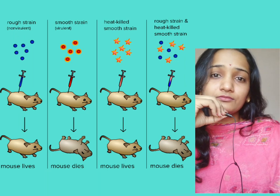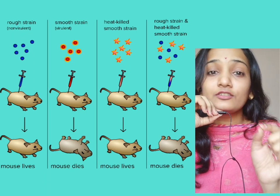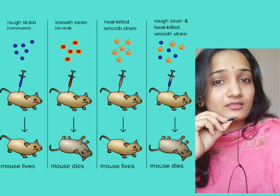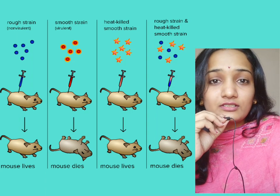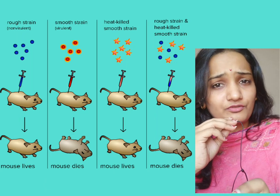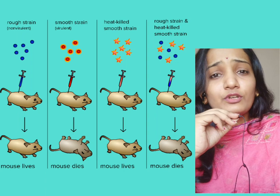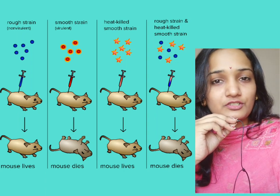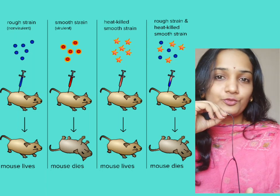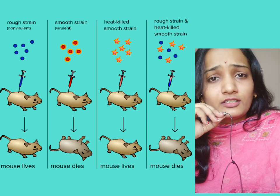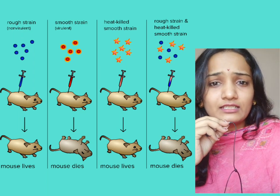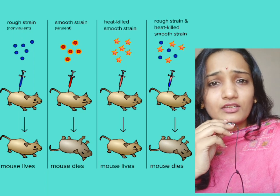In the third condition, he has taken smooth strain but the mouse is alive. Why is it alive? Because he has killed the strength of that particular strain, that is the S strain. So in the fourth condition, he has taken rough strain as well as the killed smooth strain. And you can see the mouse dies, even though there is a rough strain and a heat-killed S strain.